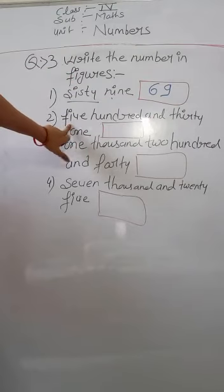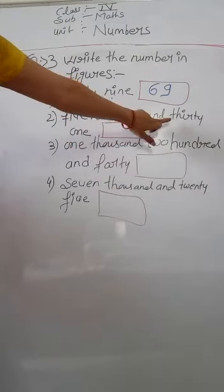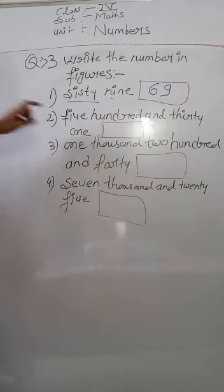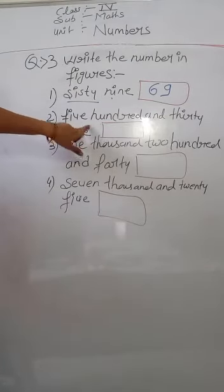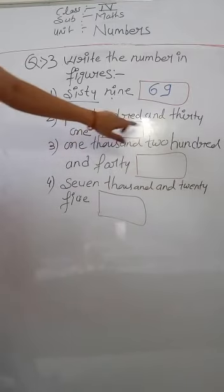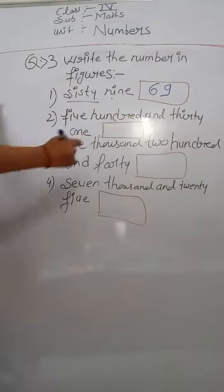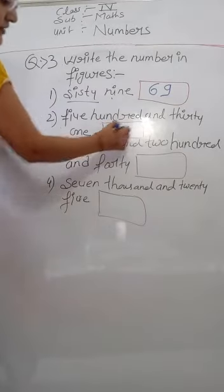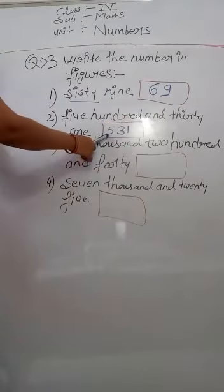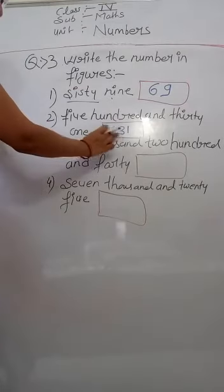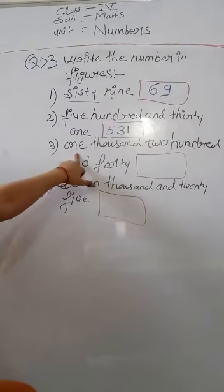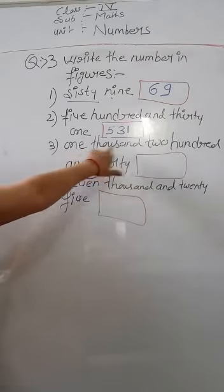Next is five thousand one hundred and thirty-one. So 5 is in the thousands place — 5100 and 31. So the answer is 5131. Clear?